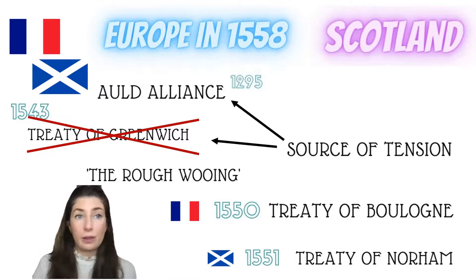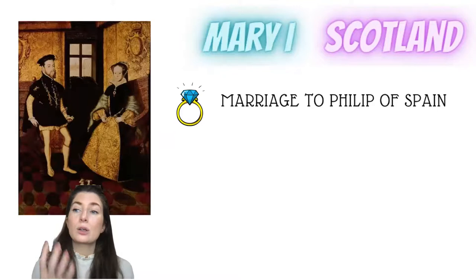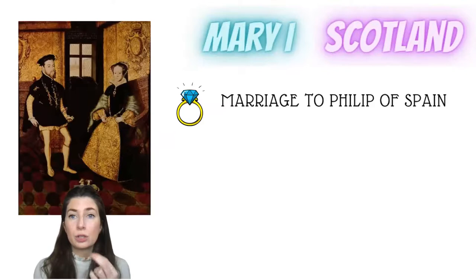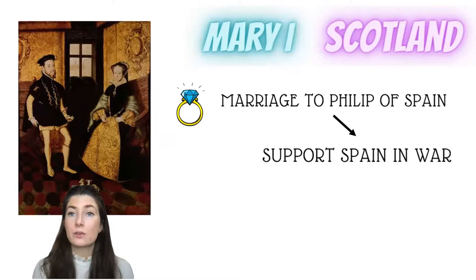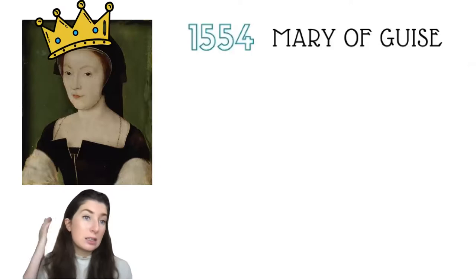Under Mary, she obviously aligns herself to Spain through her marriage to Philip, which could lead to war with France, because Spain and France were traditionally enemies — both big power blocks in Europe wanting that top spot. So we've got the potential under Mary for tensions with France and therefore likely with Scotland too. She is supported to join Philip in war against France, which leads to the loss of Calais as we know, and draws Scotland into this as well.